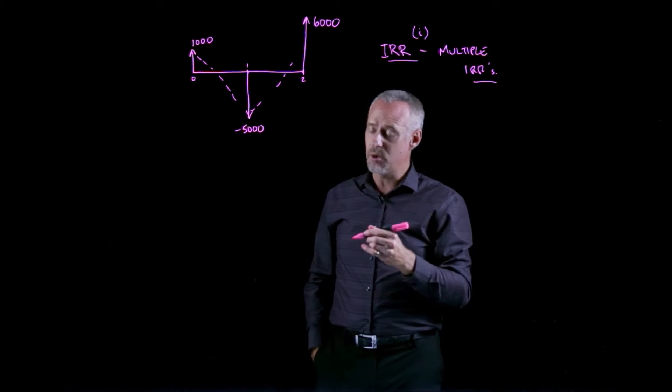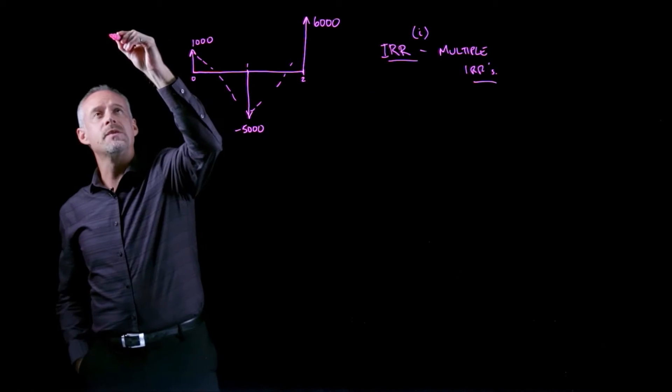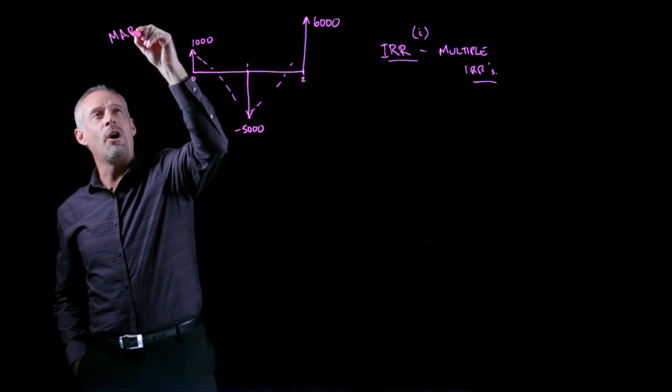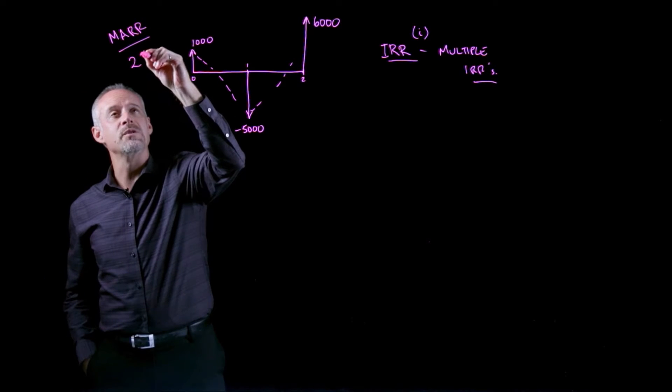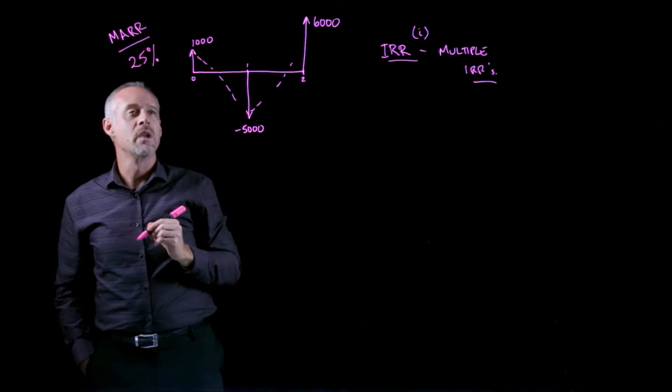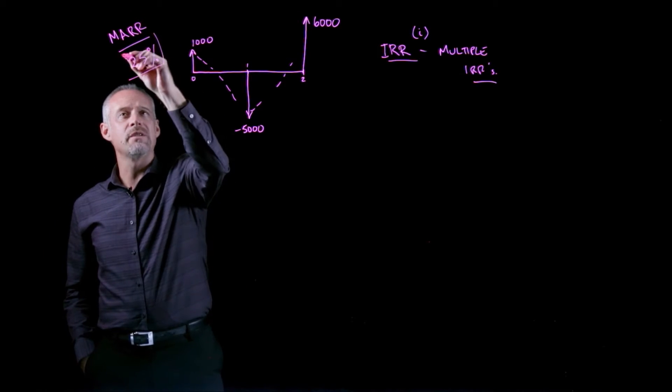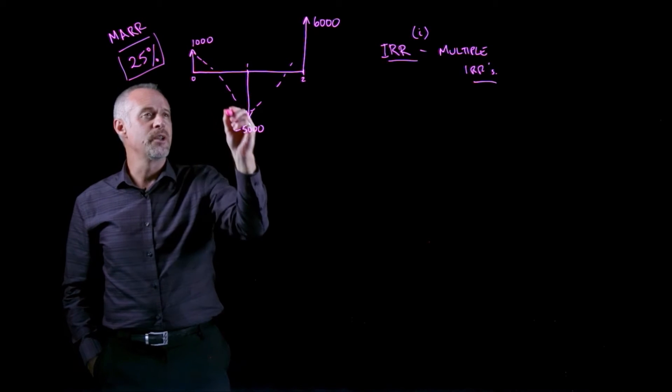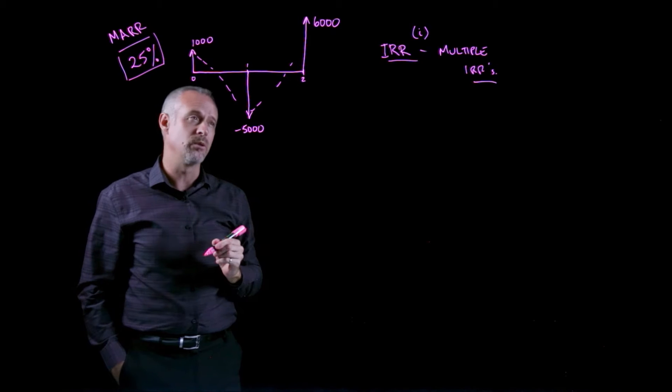In this particular problem, we're told that this company uses a MAR of 25%. So the question becomes, if the company uses a MAR of 25%, should the company invest in a project with a series of cash flows that look like this?